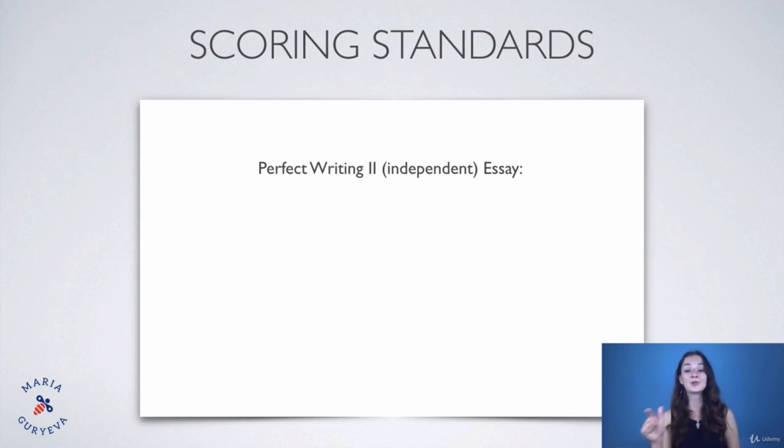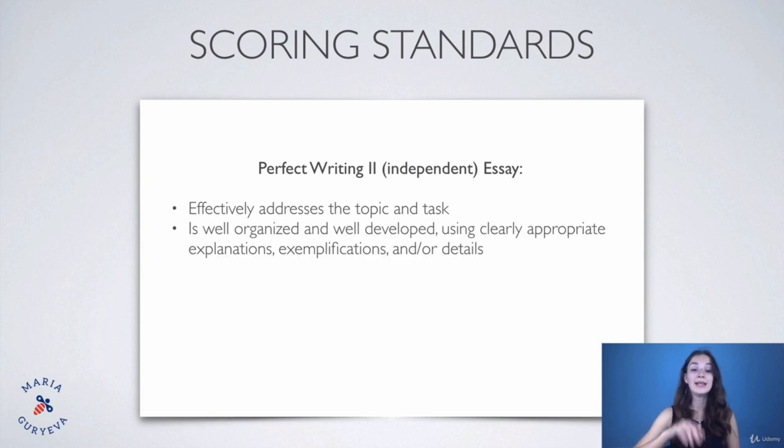Now let's have a look at scoring standards for a perfect writing number two or independent essay. Effectively addresses the topic and task, so you need to answer what you're asked about. Is well organized and well developed, using clearly appropriate explanations, exemplifications, and/or details. So again it's all about the logic, good organization so that your response is coherent. And of course we're going to talk about all those clichés, all this planning, all the structures which will make your response very coherent, logical, and well developed. Displays unity, progression, and coherence. Again, I will give you all the clichés and all the structures which will help you to make your essay united and coherent.